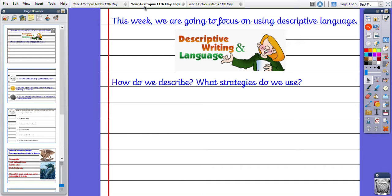So we're going to think about, first of all, how do we describe? What word types do we use to describe? How can we add further description to our writing using particular kinds of vocabulary?